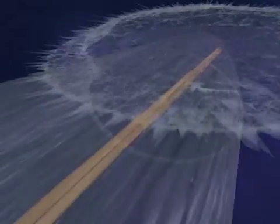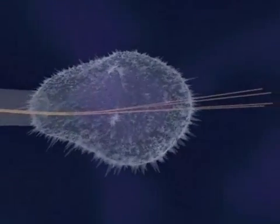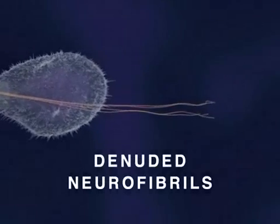Ultimately, both the developing neurite and its growth cone collapse, and some denuded neurofibrils form aggregates, or tangles, as depicted here.